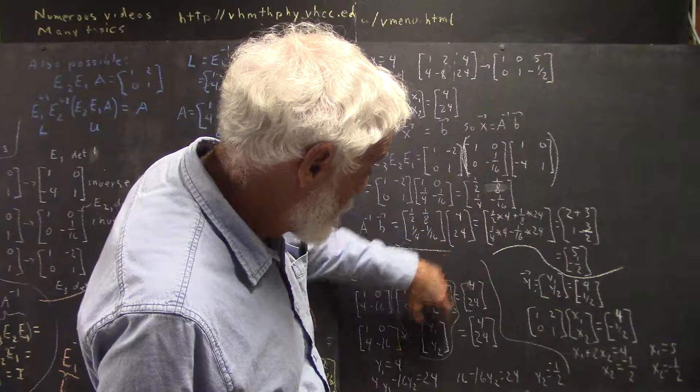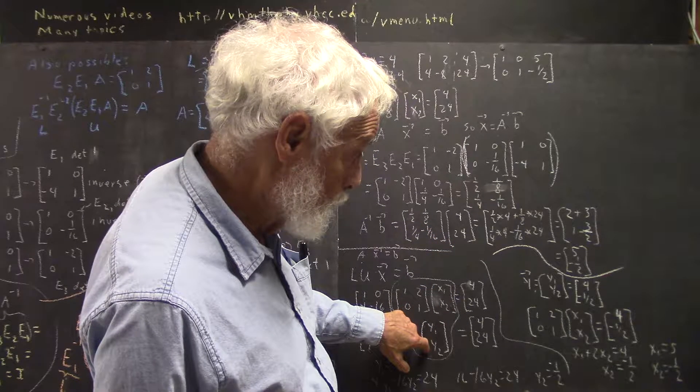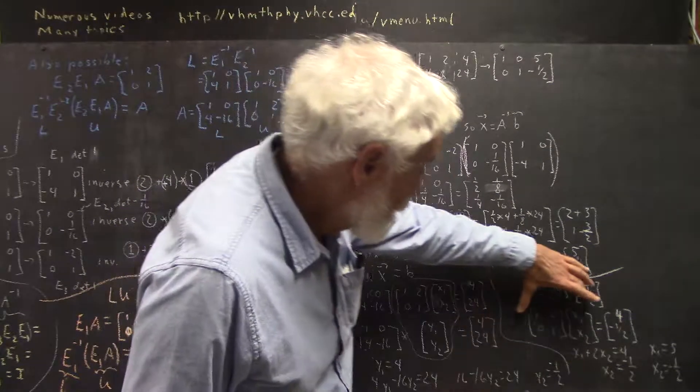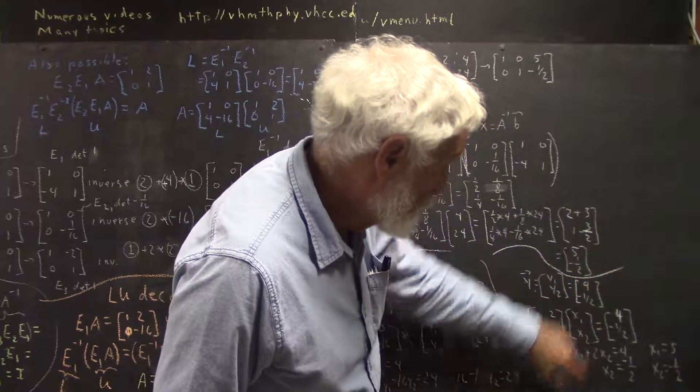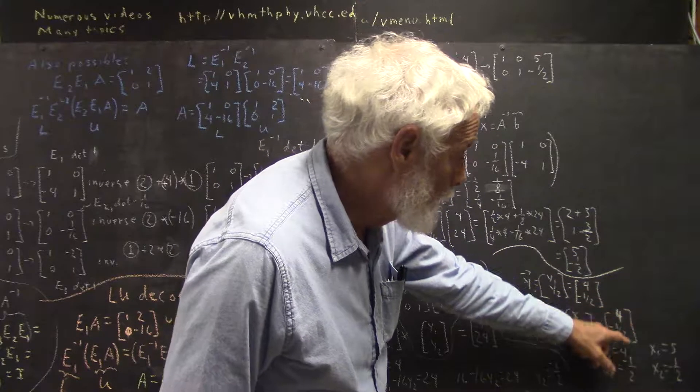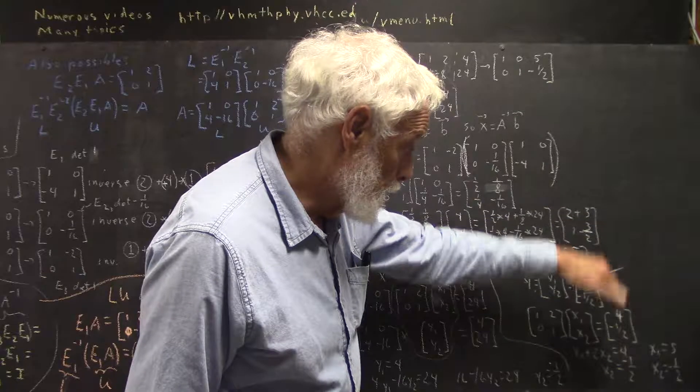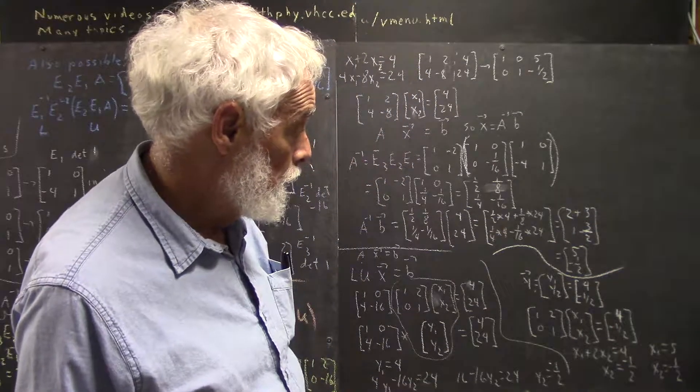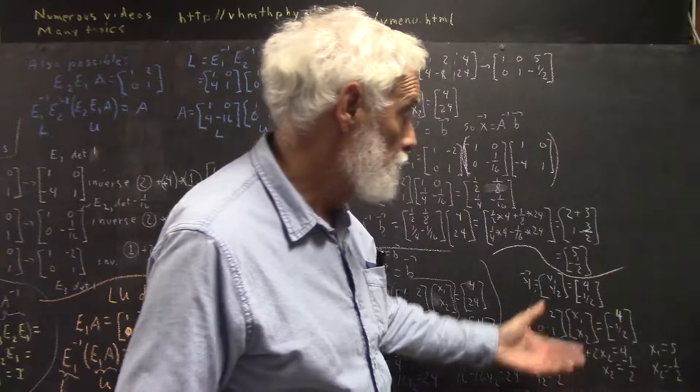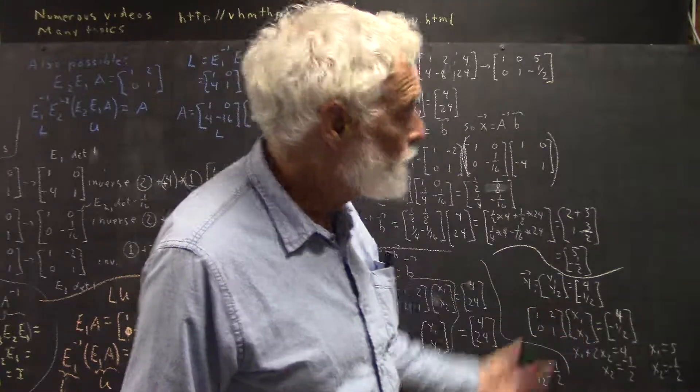Now, we know then that this upper triangular matrix times X1, X2 has to be equal to our Y1, Y2 matrix. So, here's our upper triangular matrix times X1, X2. That's equal to the column 4, negative 1 half, the column vector 4, negative 1 half.